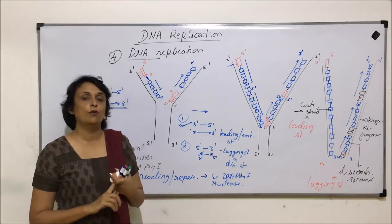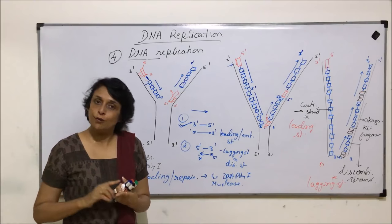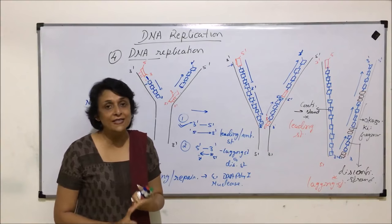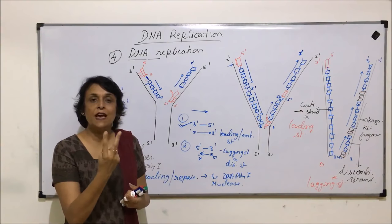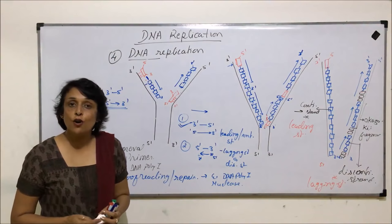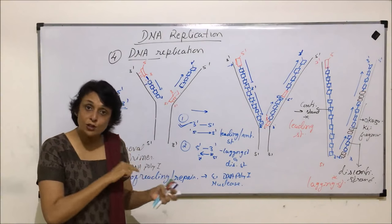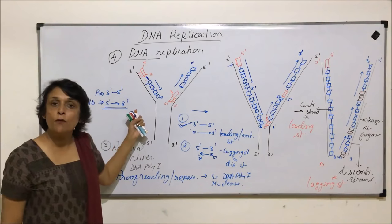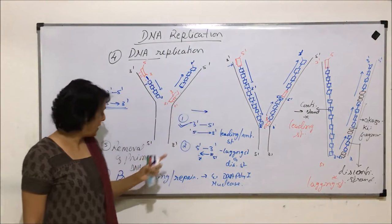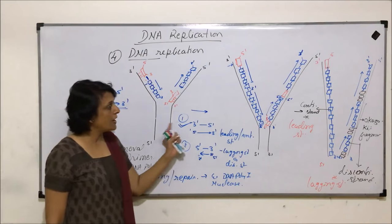To summarize the steps of DNA replication: step one is activation of nucleotides by phosphorylation — all monophosphates are turned into triphosphates. Step two is opening up of the helix with enzymes. Step three is formation of the primer, which helps in attachment of DNA nucleotides. Step four is actual DNA replication with the help of DNA polymerase III. Step five is removal of the primer and filling up of the gaps. Step six is proofreading. We now have two DNA molecules synthesized by a semi-conservative mode.